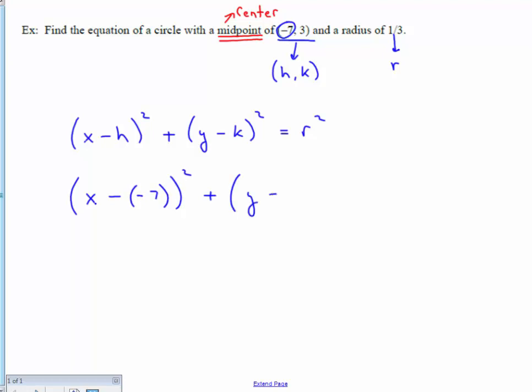and then Y minus the K value is given as 3. You square that quantity, and then the R is equal to 1 third. You also make sure that you square that quantity.